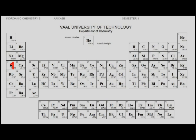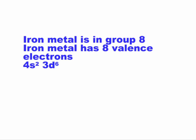Counting across: 1, 2, 3, 4, 5, 6, 7, 8. So you can see now that iron, which is in group 8, contains 8 valence electrons. Two of those electrons are in your 4s orbital, and 6 of those electrons are in your 3d orbital.